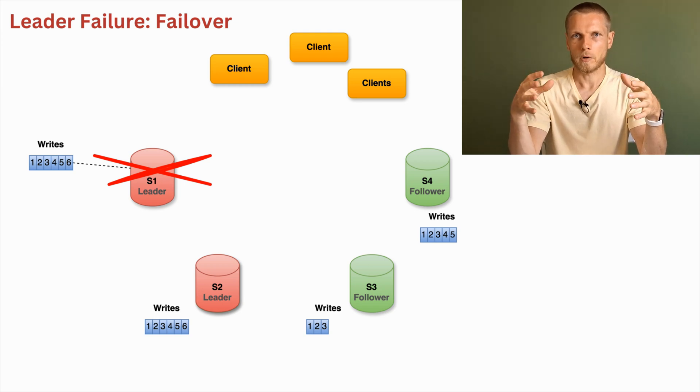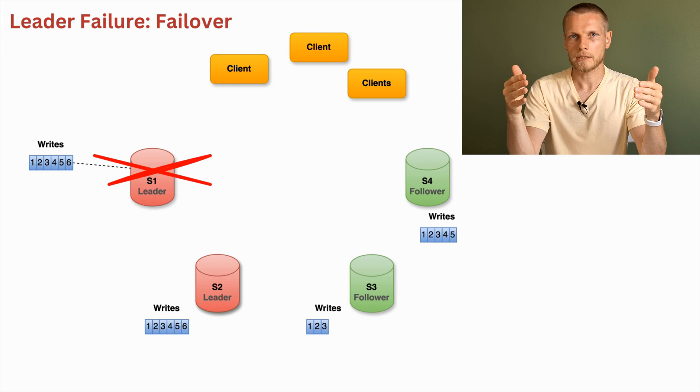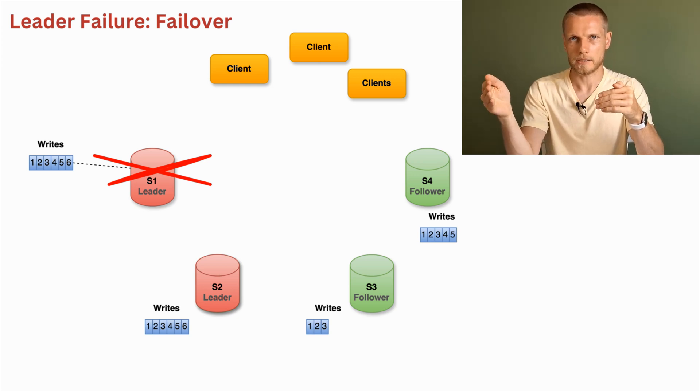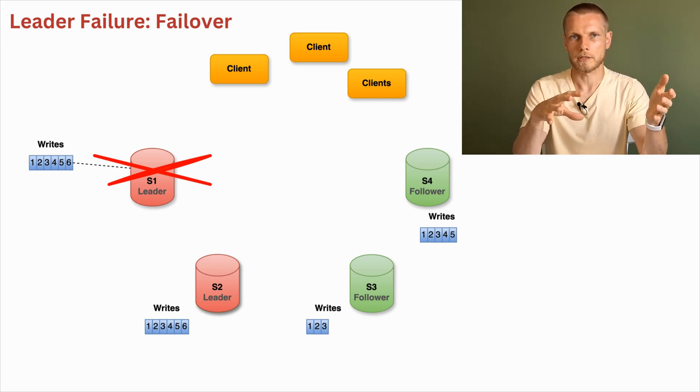Often when election algorithm works, it takes into account how many writes each follower has. And usually follower with the most recent write becomes the leader because in that case there is a lesser chance that we lose some data. In our example, S2 had all the writes which were available on the leader when the leader failed. So in this example, we wouldn't lose any data because of the failover process.